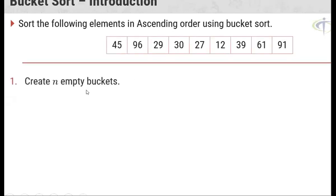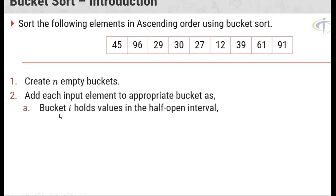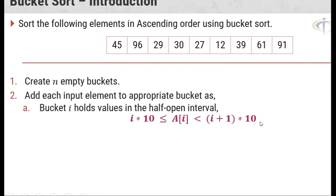There is one more example related to bucket sort. These are the elements — create an empty bucket of size N. The next step is to add each input element to the appropriate bucket. Bucket i holds values in the half-open interval: a[i] should be greater than or equal to i × 10, and also less than (i + 1) × 10.